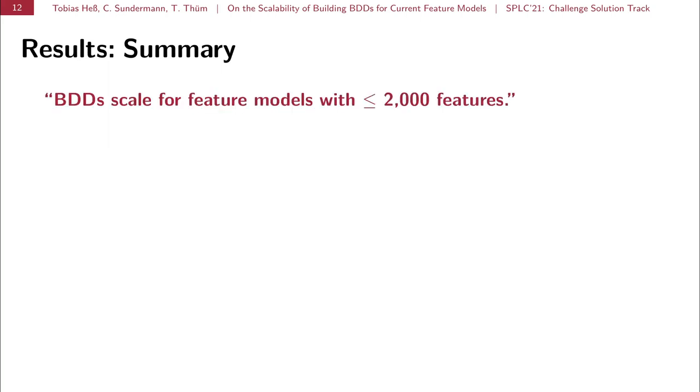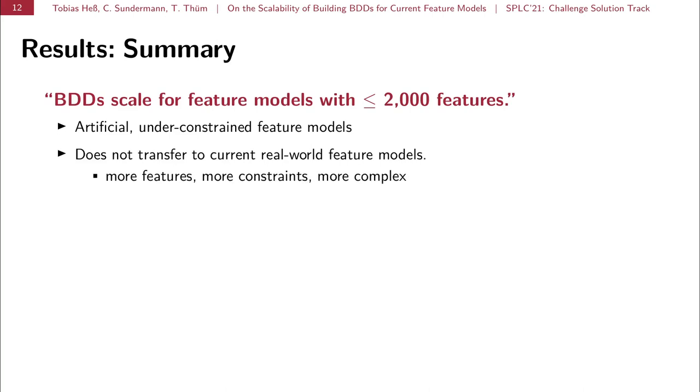So summarizing our results, the statement of Mendonca et al. appears to not transfer to current real-world feature models. We want to emphasize again that this statement was derived from artificial feature models, which by today's standards are quite under-constrained. And we see the reason that this result does not transfer to current real-world feature models in that these have more features, have way more constraints and are even more complex, with more features being interconnected by cross-tree constraints and so on. We also saw that predicting BDD building performance is difficult and the typical metrics used in earlier research are not meaningful for current real-world feature models.